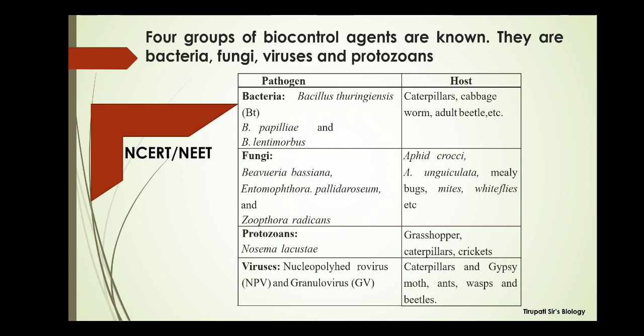For fungal biocontrol agents, examples include Beauveria, Entomophthora, Pellicula, Derosium, and Zygorhizidium radicans. These fungi act against insects such as aphids, mealybugs, mites, and whiteflies. So these named fungi kill all these insects and flies and save the host plant.